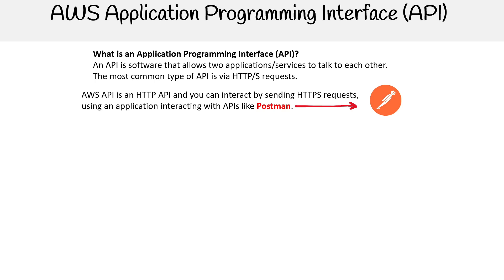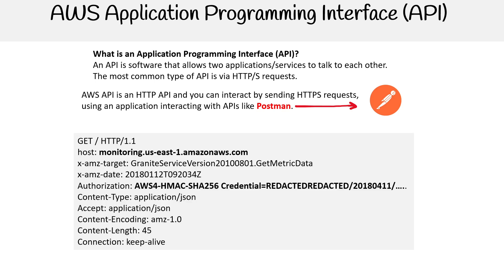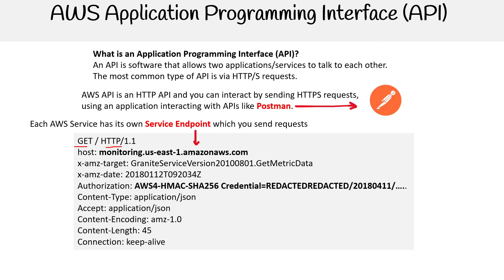Let's take a look at an example of a request that we would send to AWS. What's really important to make note of is the service endpoint. We are using the HTTP protocol and sending a GET request, so we're just looking to read information. Every single service basically has their own service endpoint — monitoring probably goes to CloudWatch logs, and it's targeting us-east-1.